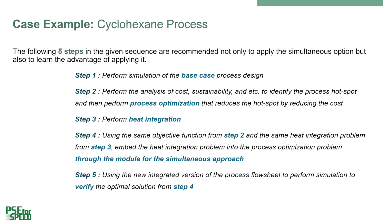Step 3: Perform the heat integration. Note that steps 1 to 3 correspond to the sequential strategy, giving incremental improvements. Step 4: Using the same objective function from step 2 and the same heat integration problem from step 3, embed the heat integration problem into the process optimization problem through the module for the simultaneous approach. In this step, the new optimization problem must be solved and the optimal solution is found, which would be better than those obtained after step 2 and step 3.